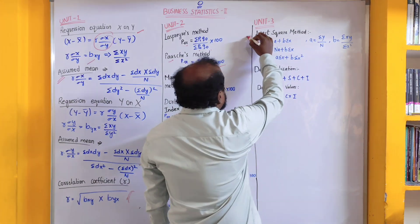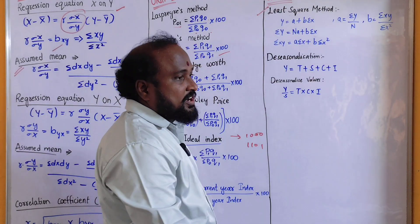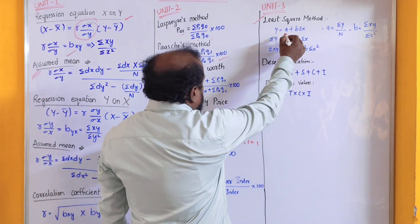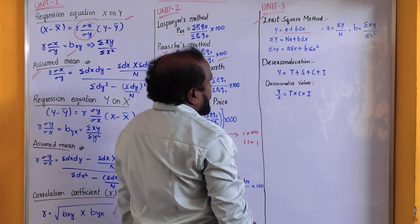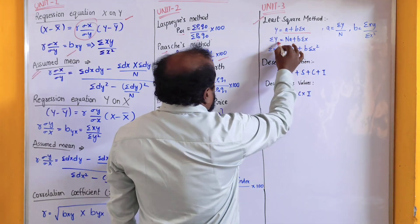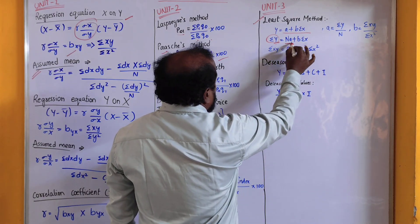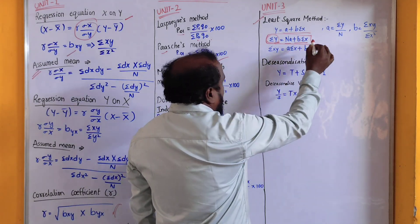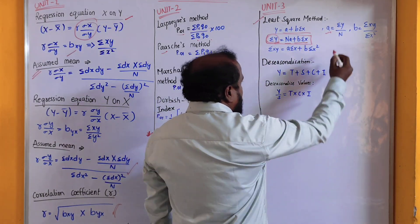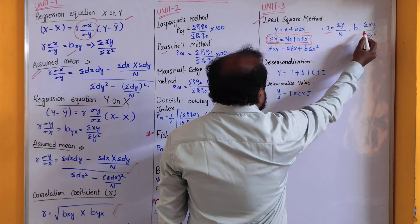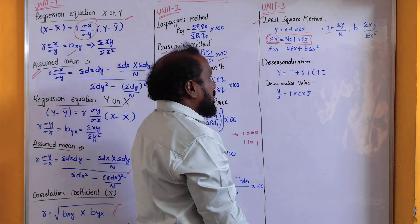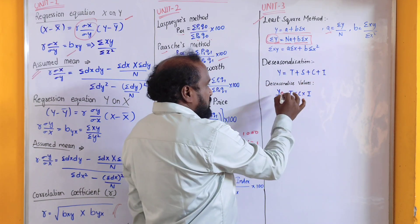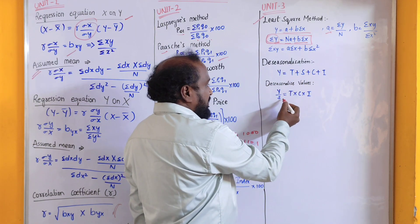Unit number three — the least square method is very important; every time one question will appear. The formula is Y equals A plus B into X. The normal equations are: sigma Y equals N-A plus B-sigma-X. To calculate values: A equals sigma Y by N, and B equals sigma XY by sigma X-square. For de-seasonalization, Y equals T plus S plus C plus I, and the seasonal component S equals Y divided by T into C into I, multiplied by 2.